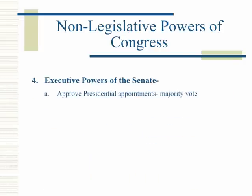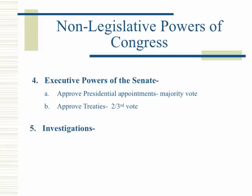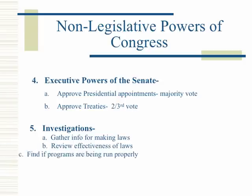Executive powers of the Senate include approving presidential appointments by majority vote and approving treaties by a two-thirds vote. Investigations allow Congress to gather information for making laws, review the effectiveness of laws, and find if programs are being run properly.